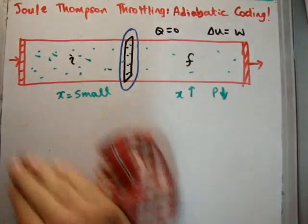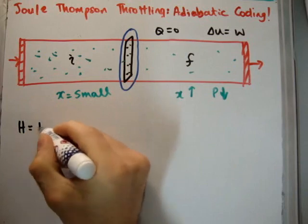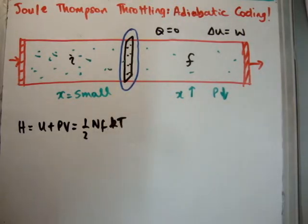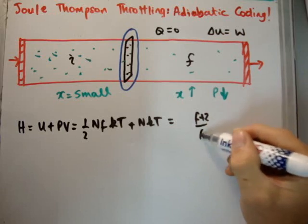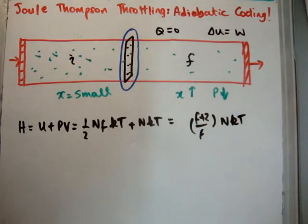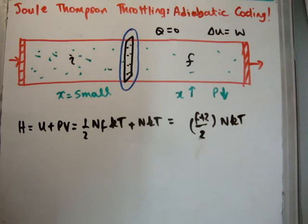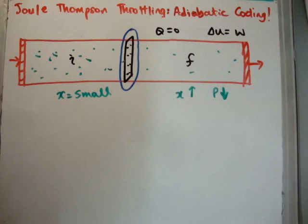Now just as an aside, an ideal gas could never work for the Joule-Thompson process because H is equal to U plus PV. Using the equipartition theorem we have half N F K T. F is the number of degrees of freedom of course. And we're also going to have the ideal gas law, N K T. So that's going to be just F plus 2 over 2 times N K T. That's the enthalpy of an ideal gas. But the problem here is that if it's isenthalpic it implies that the temperature is constant. Constant enthalpy implies constant temperature for an ideal gas. But as we'll see in a moment, that's not what we want. It's precisely because it's not constant temperature that we get this cooling.